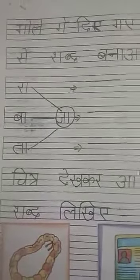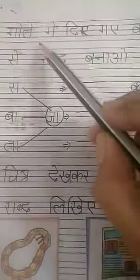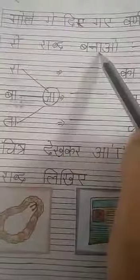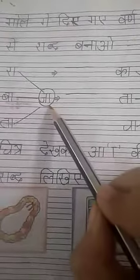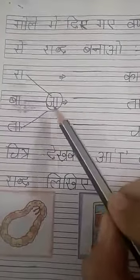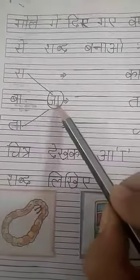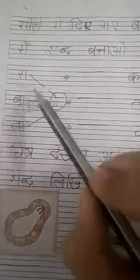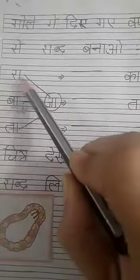Good morning students. Today we will do a new activity. You have to form words from the letters given — which means form words with the help of the letters given in the circle. Like this.